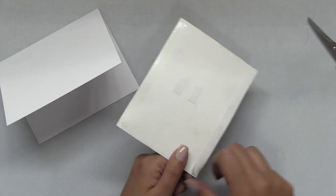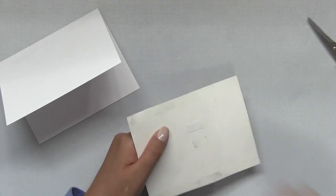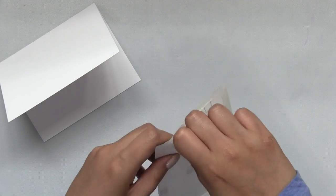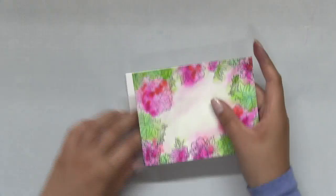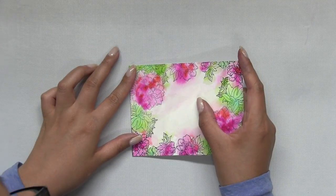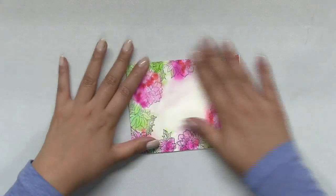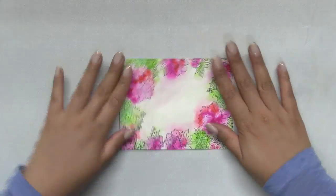Then I used our strong double-sided adhesive sheets which I cut into strips and I applied them behind my panel, and then I mounted that watercolored painted panel onto a top folding A2 card base.